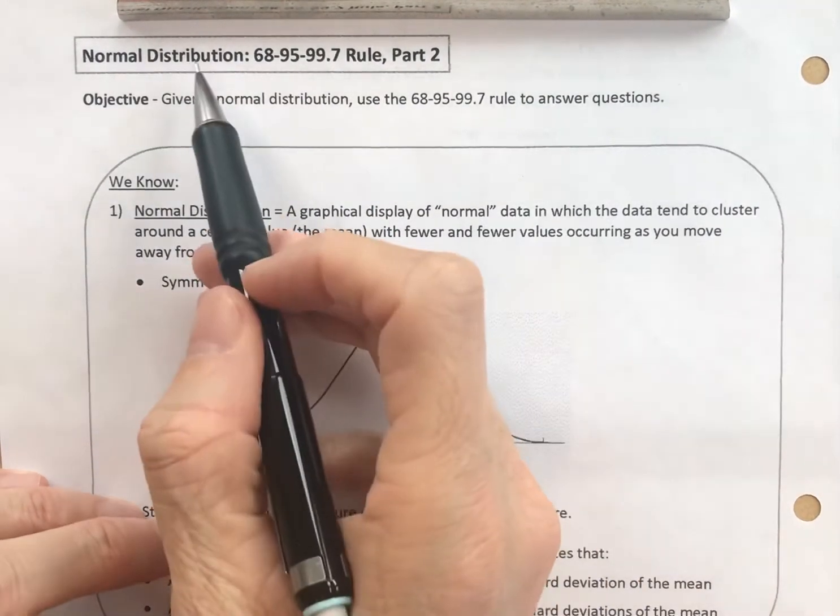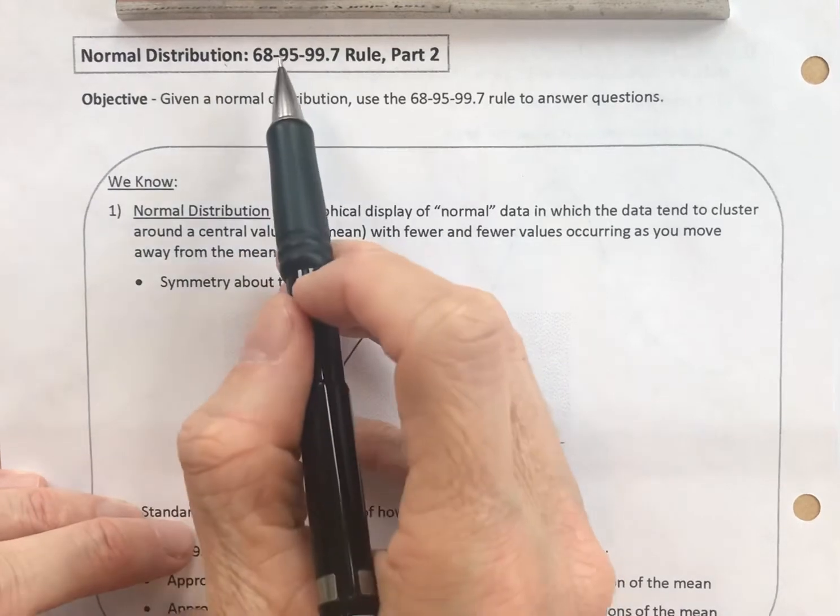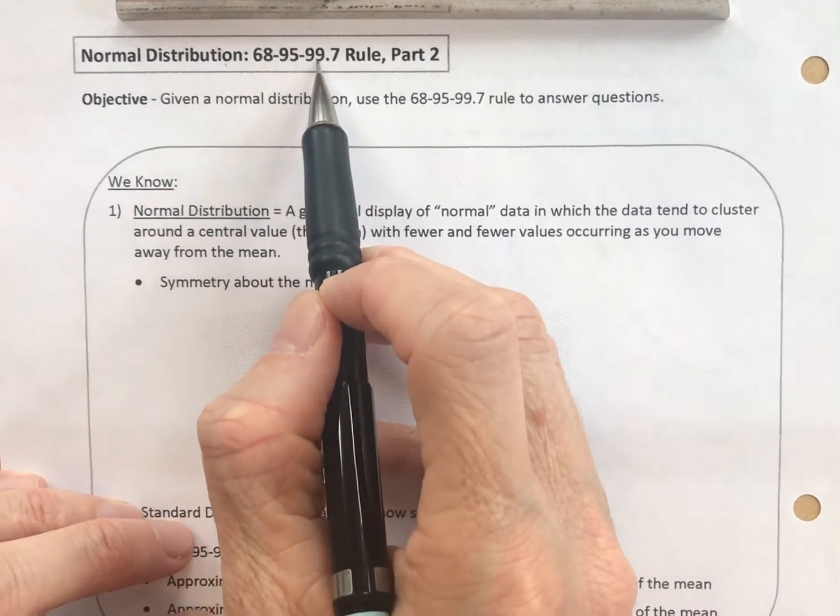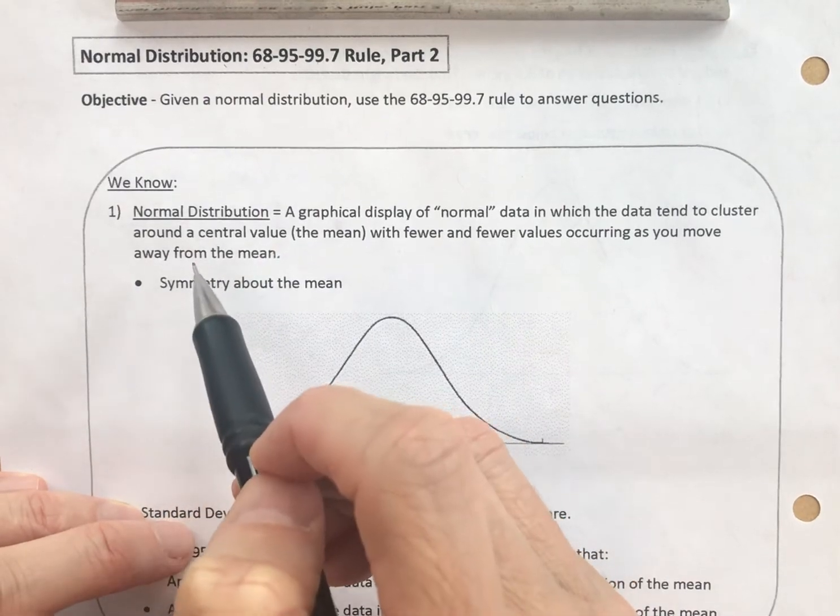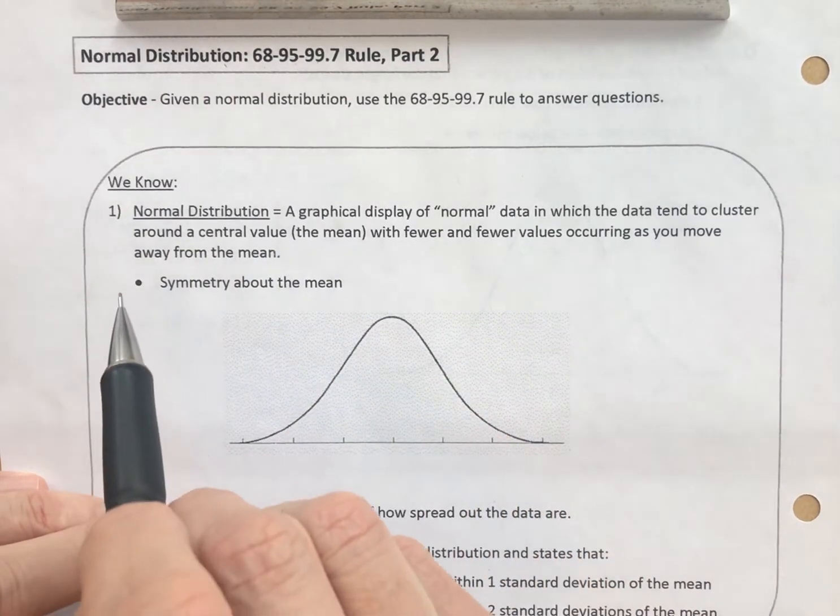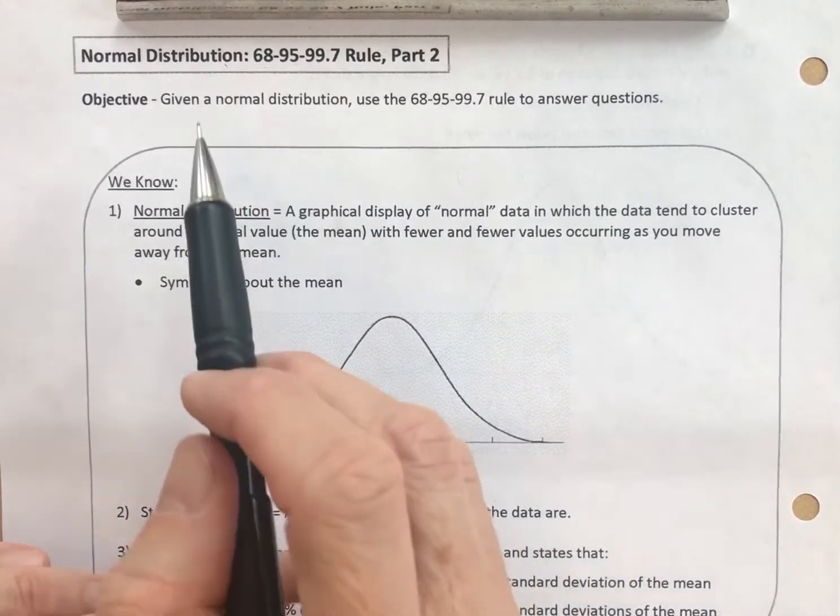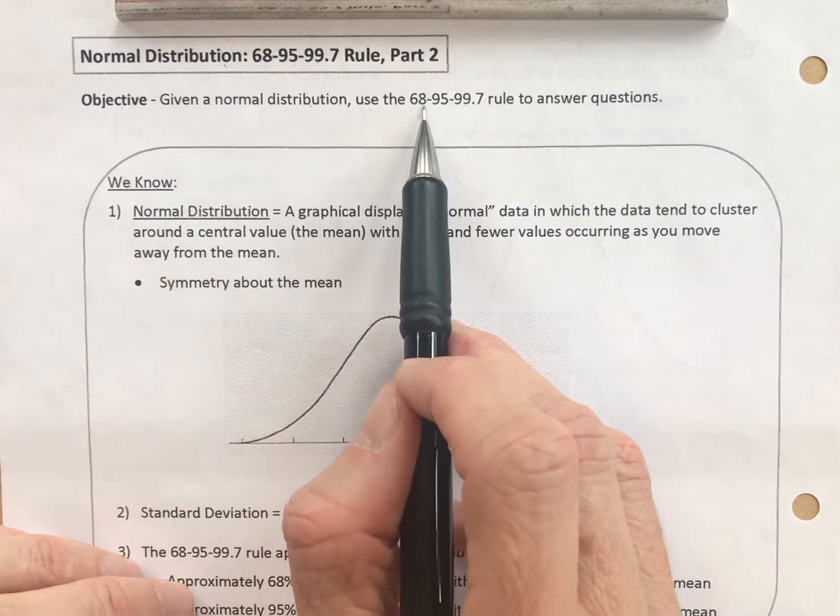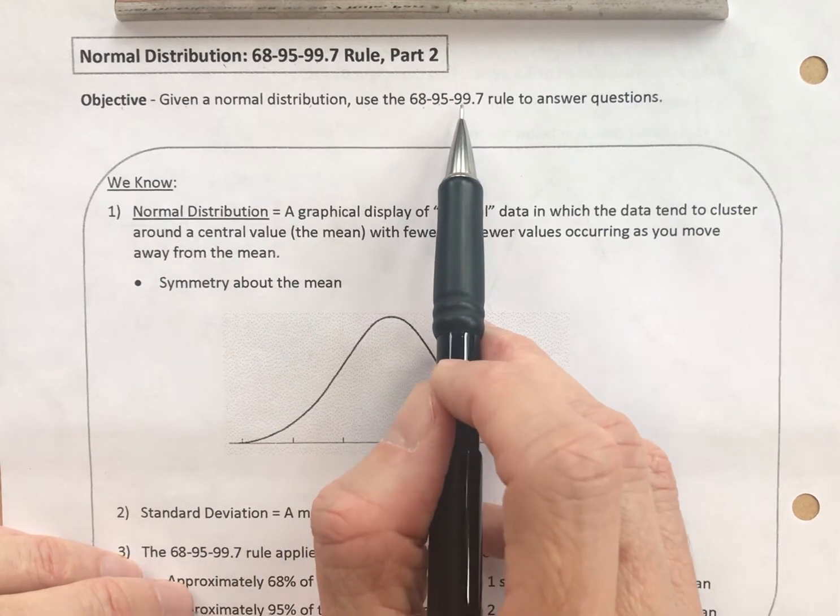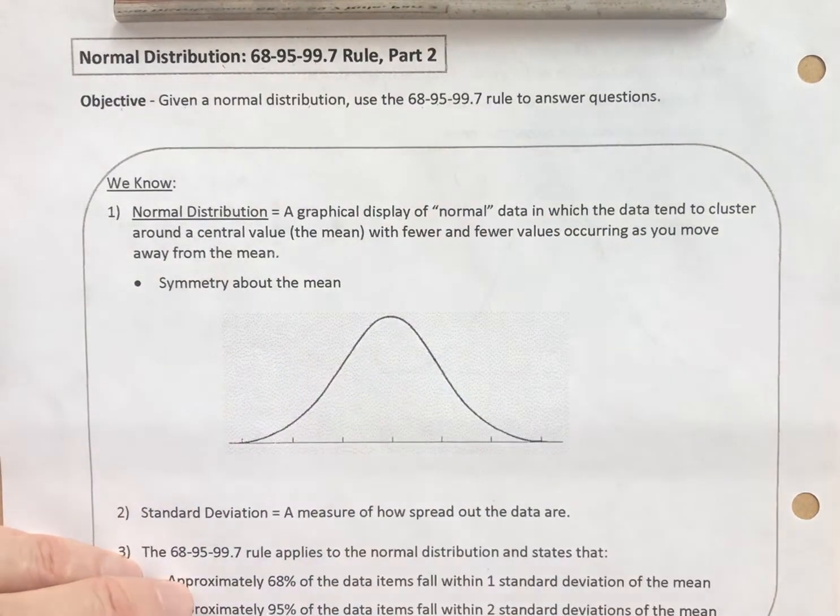Now that we've learned about the normal distribution, the 68-95-99.7 rule, and how standard deviations apply and work with a normal distribution, let's put it all together. Objective: given a normal distribution, use the 68-95-99.7 rule to answer questions.